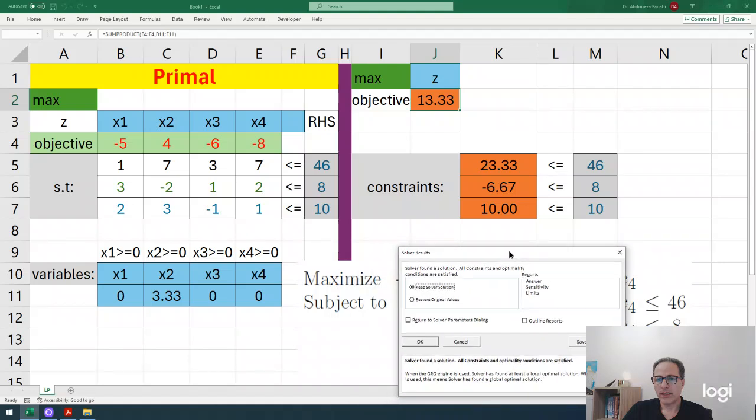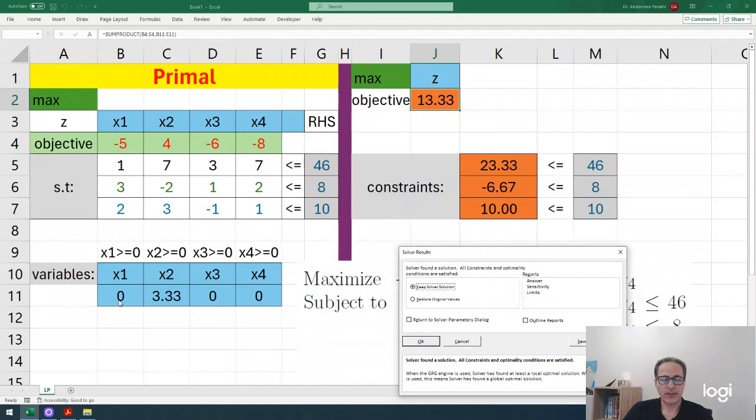The best solution for decision variables are 0, 3.33, 0, 0, and the maximum value for z is 13.33. Looking at the constraints, they're all satisfied. The third one is specific - these two are exactly equal. We call this a binding inequality when left-hand side equals right-hand side, or we use all the resource of type 3.